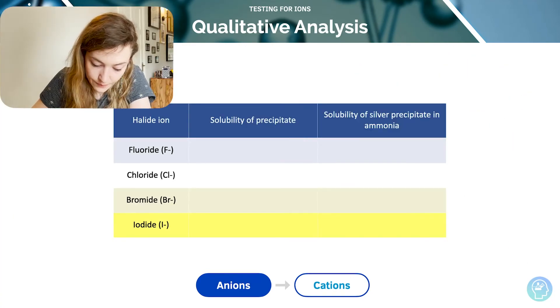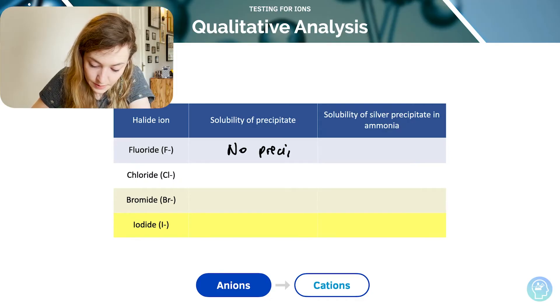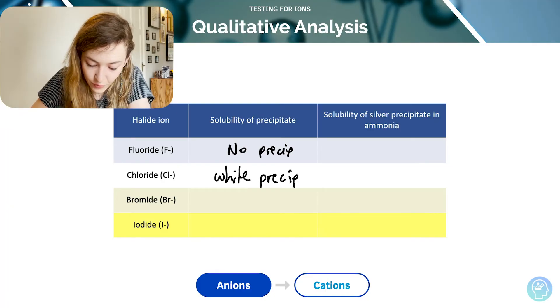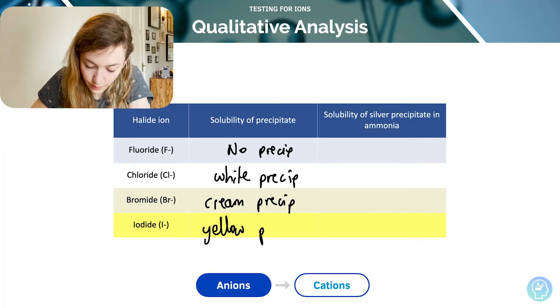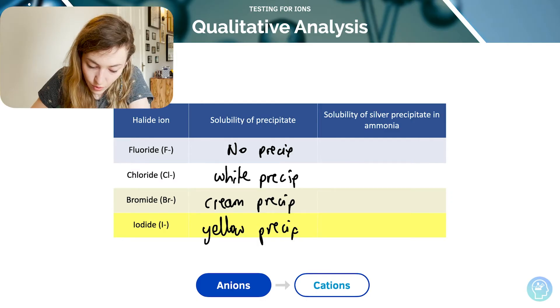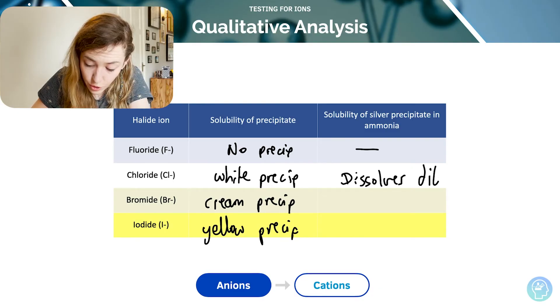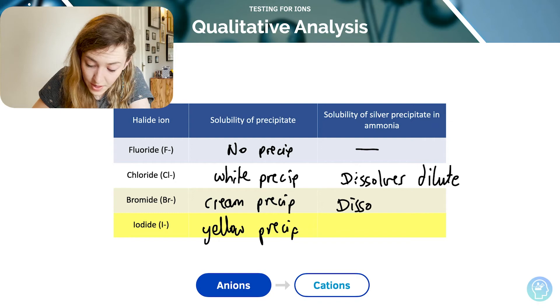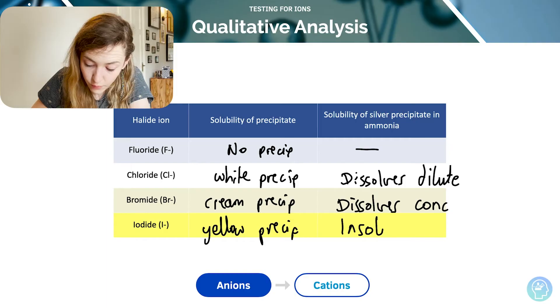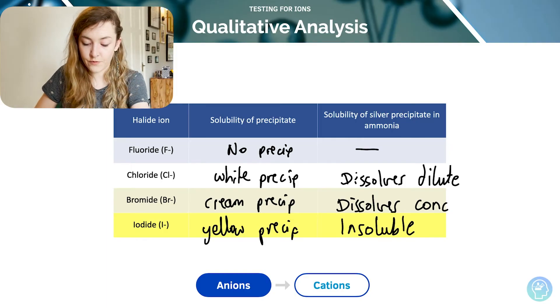Let's just summarize that quickly. Fluoride: no precipitate, no precipitate, nothing to dissolve. Chloride: white precipitate, dissolves in dilute ammonia. Bromide: cream precipitate, dissolves only in concentrated, not dilute. Iodide: yellow precipitate, insoluble, does not dissolve.